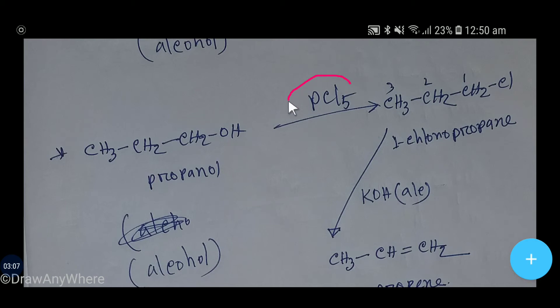If we add phosphorus pentachloride, then OH will be replaced by chlorine from the phosphorus pentachloride, so we will get 1-chloropropane. This is very similar reaction to the previous conversion.